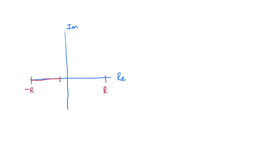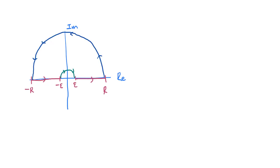We're going to go along this path but stop at minus epsilon, then circle around, stop at epsilon, and then continue all the way to r. And then we are going to circle around like this. So the path we're integrating looks something like this. Rather than integrating sine z over z, we're going to integrate e to the iz over z.